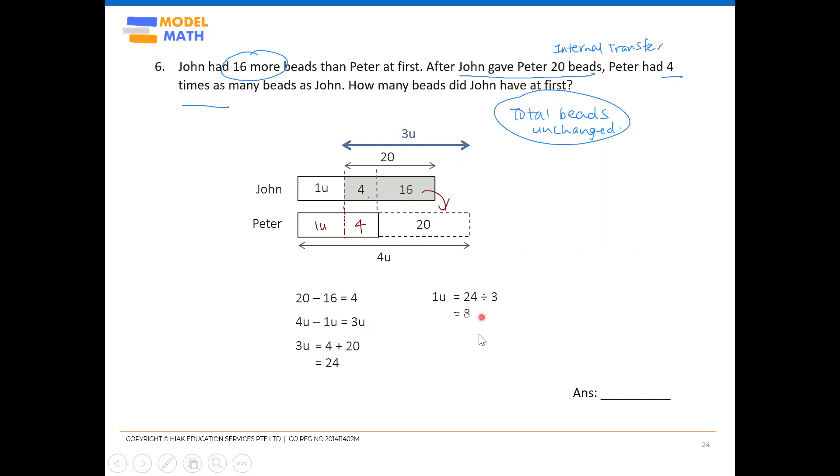So of course, we're going to find one unit. One unit is eight. Eight beads. Finally, we can see what the question wants. They want John at first. So John at first is the whole of John's model, which is one unit plus the shaded part. So one unit is eight. Simply eight plus 20.